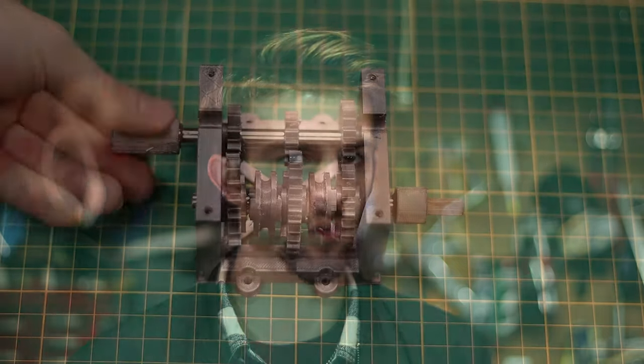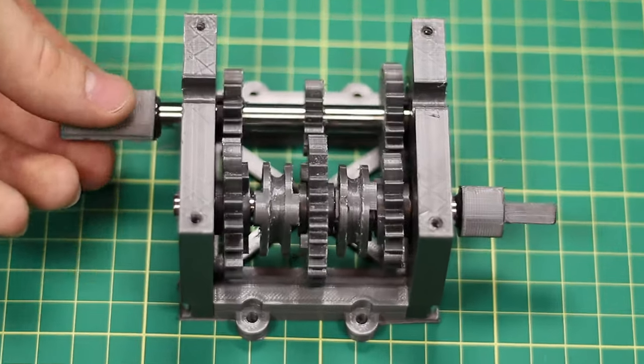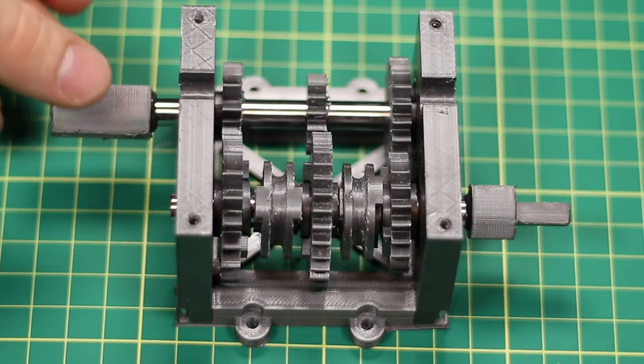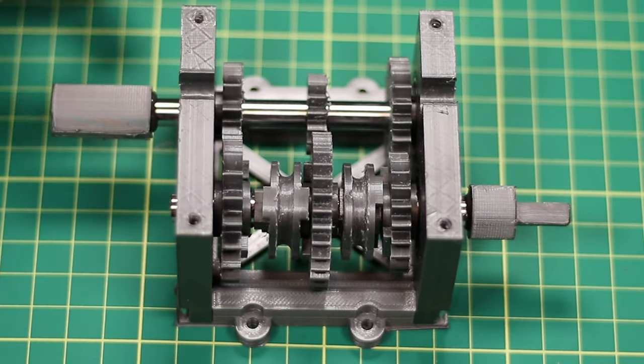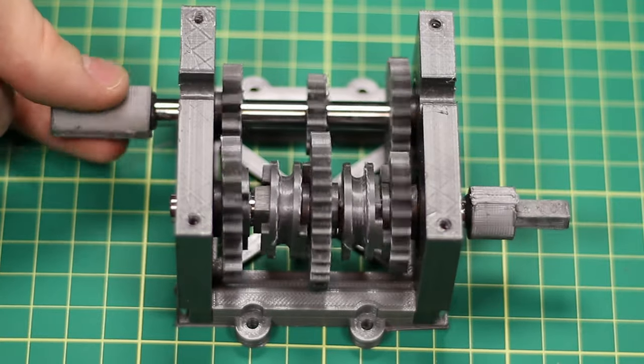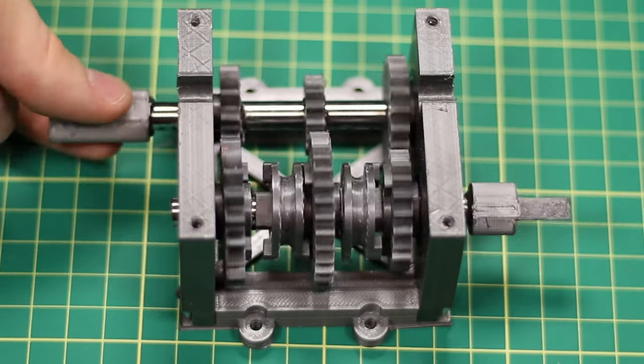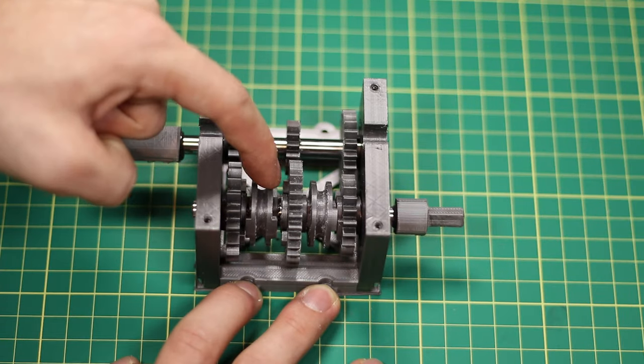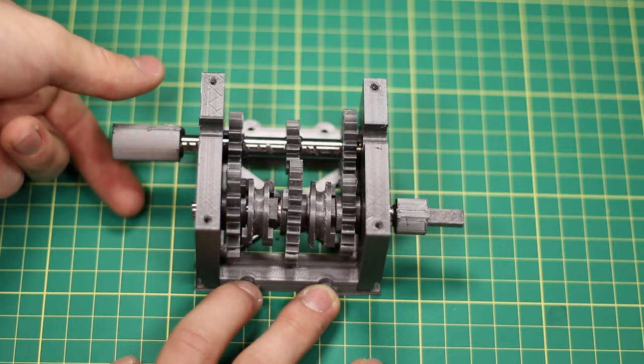Right, so now that we have it put together, you can actually begin to see how the powertrain is going to work. When the dog gears are in the middle, no power is going over to the output shaft. But when I move it over into the first gear position, the power moves from the output shaft to the first gear, through the dog gear, and then through to the output shaft. When I move it into the second gear position, you can see that the shaft speeds up a little bit.